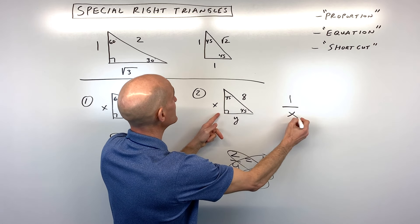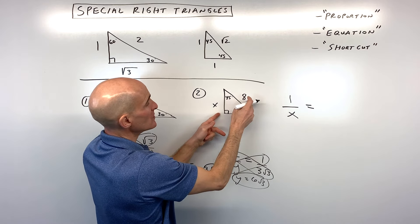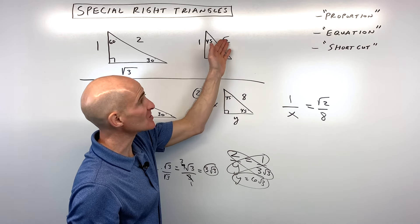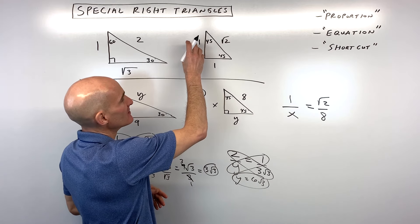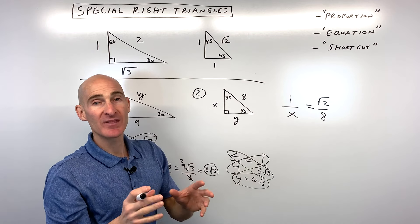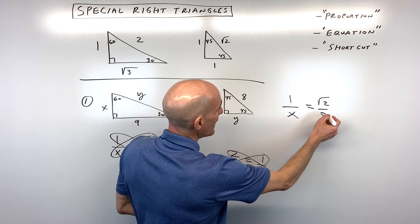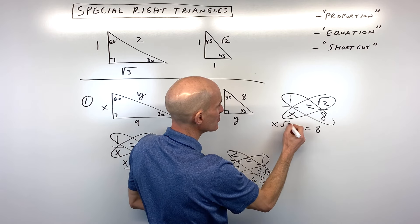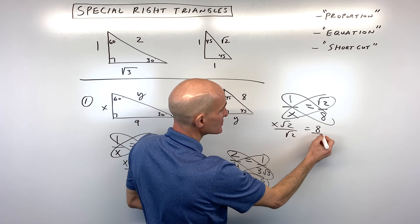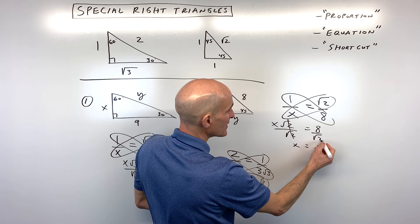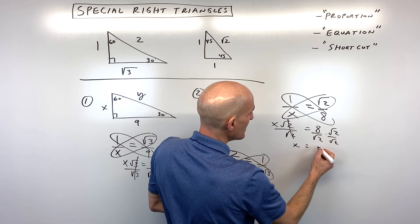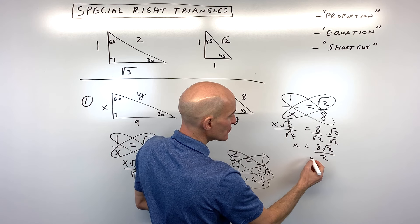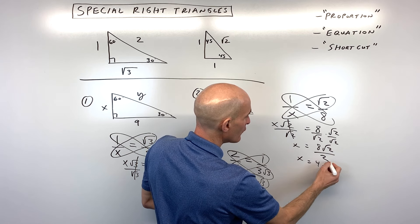I'm going to say 1 is to x as square root of 2 is to 8. Pay attention — you don't want to switch the order; make sure you're going from this triangle to this triangle consistently. Cross-multiplying gives us 8 equals x square root of 2. We divide both sides by square root of 2, then rationalize by multiplying top and bottom by square root of 2. That gives us 8 square root of 2 over square root of 4, which is 2. Reducing, x equals 4 square root of 2.